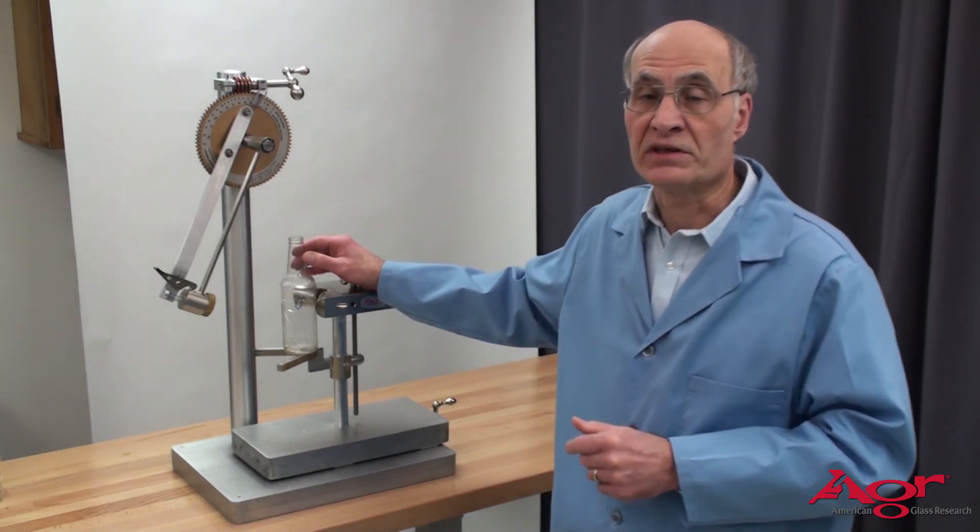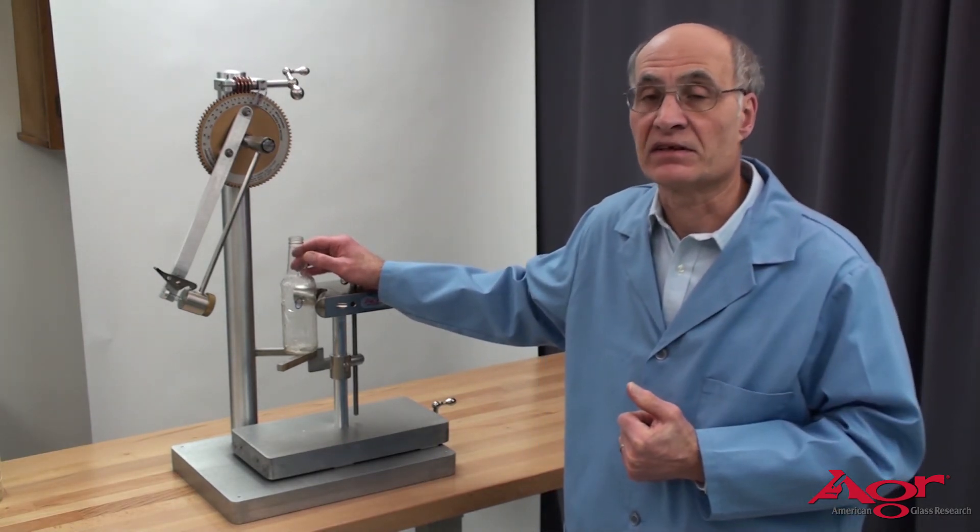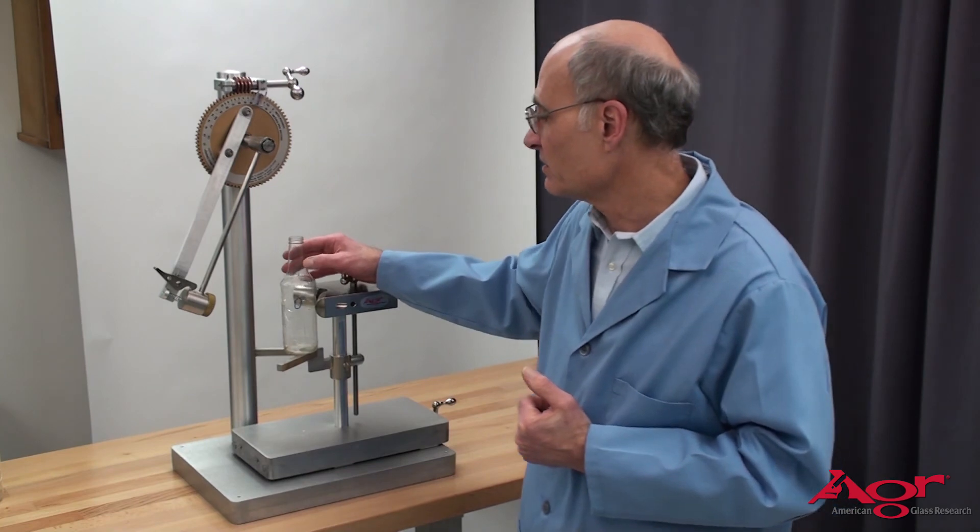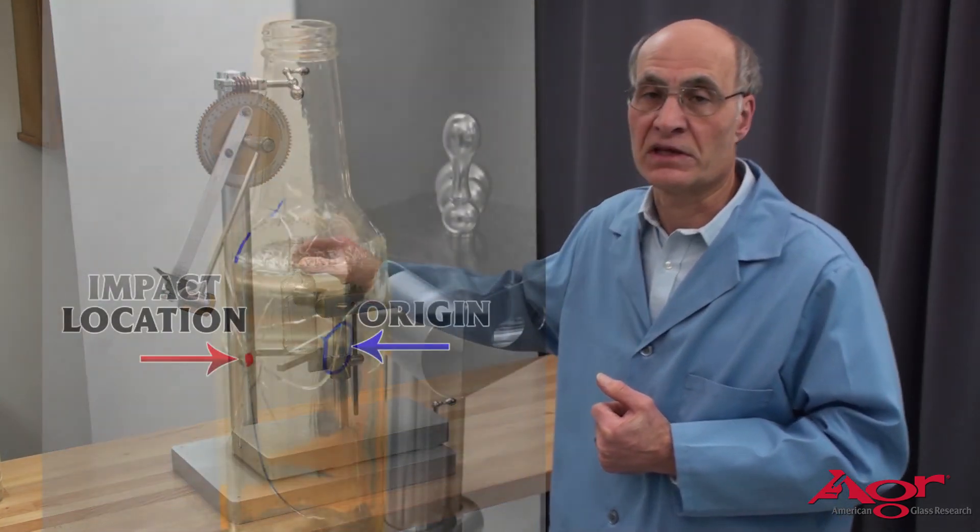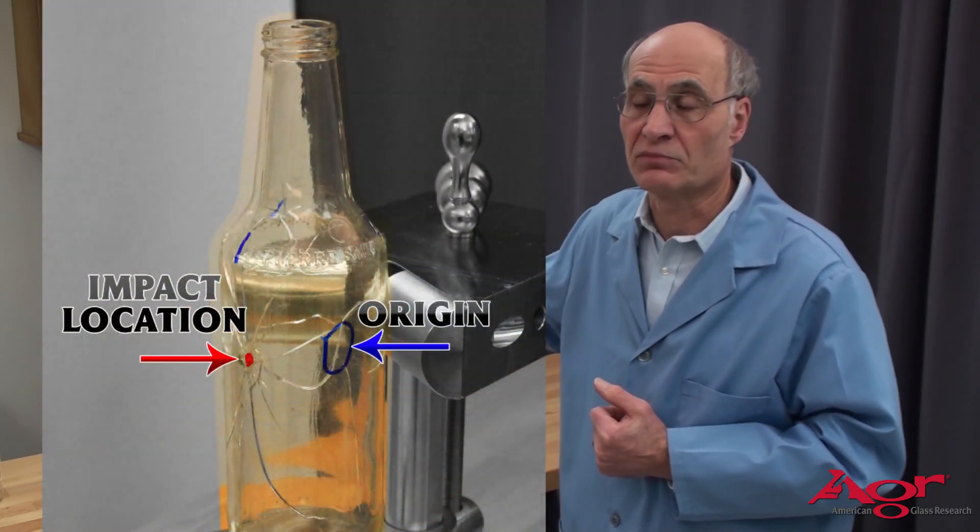We impacted the bottle at one point, but the fracture is off to the side of that defect on the outside. The defect that we have put on the sample is shown by the blue mark.